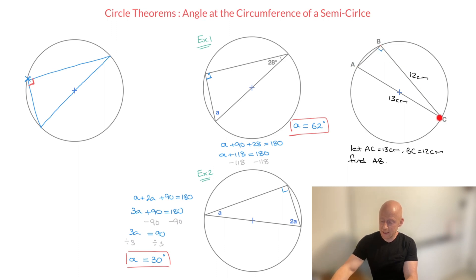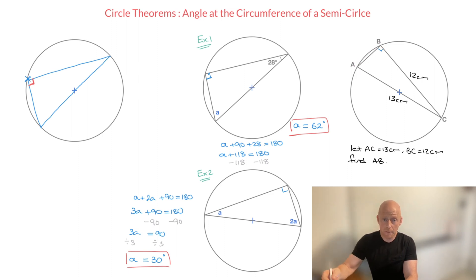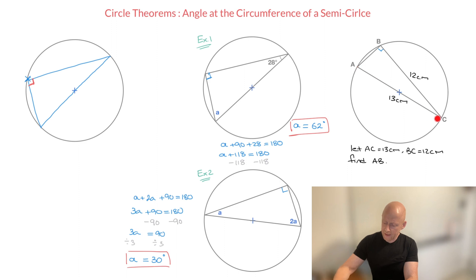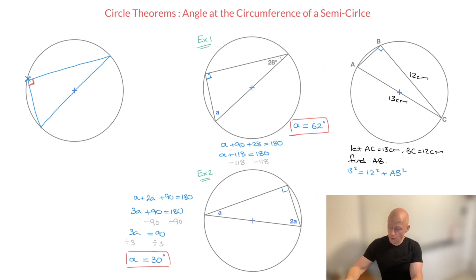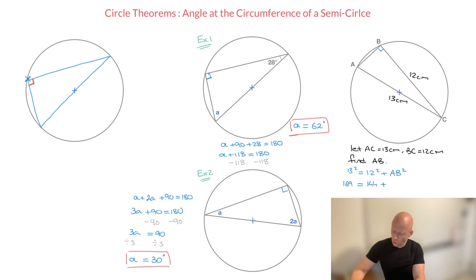So triangle ABC is in fact a right angle triangle, and its hypotenuse is this diameter. Since it's a right angle triangle, to find the unknown side length AB, we can use Pythagoras' theorem, which states that the square of the hypotenuse AC squared equals the sum of the squares of the other two sides. So 13 squared equals 12 squared plus AB squared. Now 13 squared is 169, and 12 squared is 144, so 169 equals 144 plus AB squared.